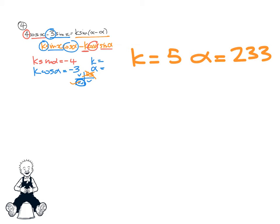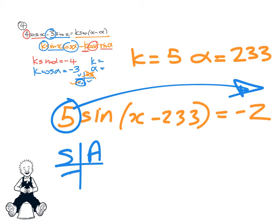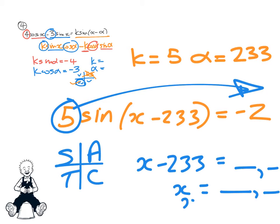So the second part of the question is you've got to solve 5 sine x minus 233 equals negative 2. So get the 5 over first of all, and then do your all sine tan cos stuff. So your angle will equal something and something. Take the negative 233 over so you'll get your answer as something and something. You'll probably have to bring it back inside before you get your final answer.